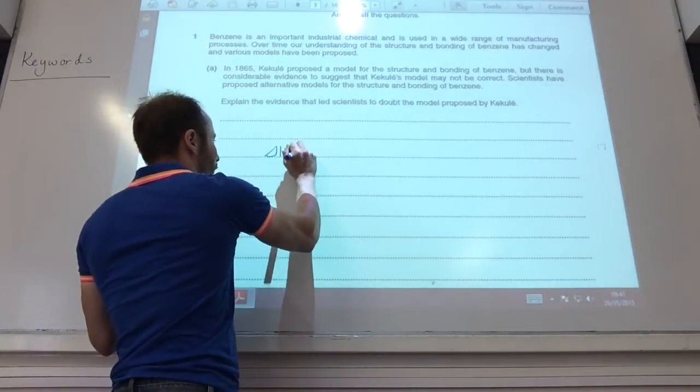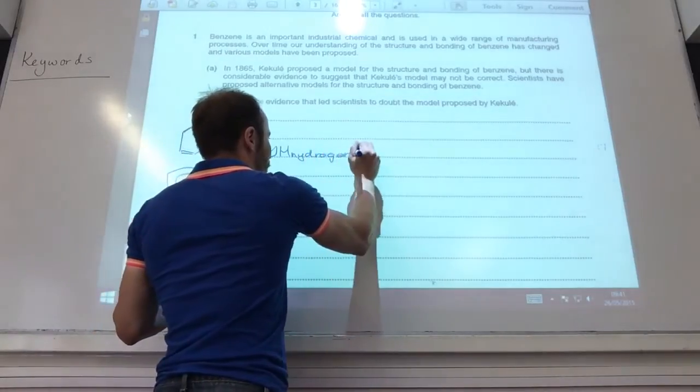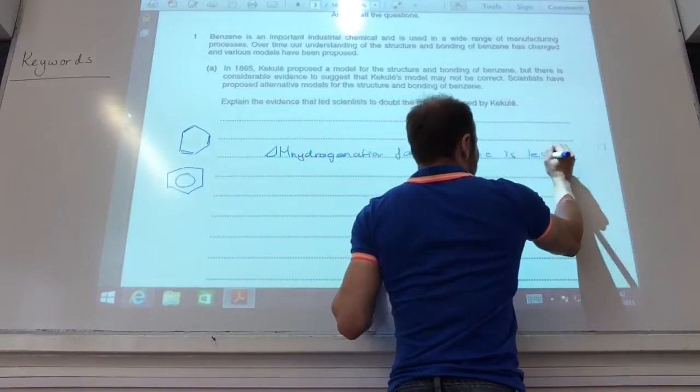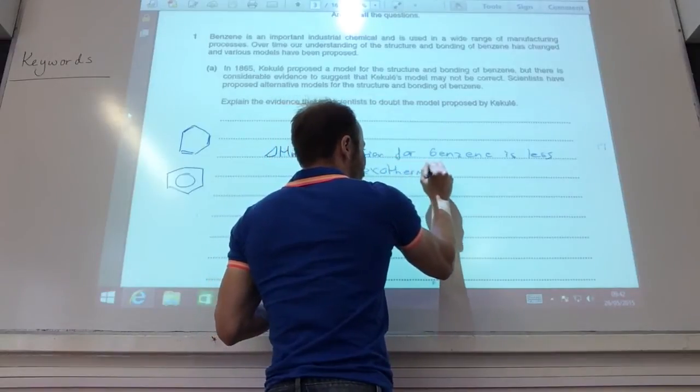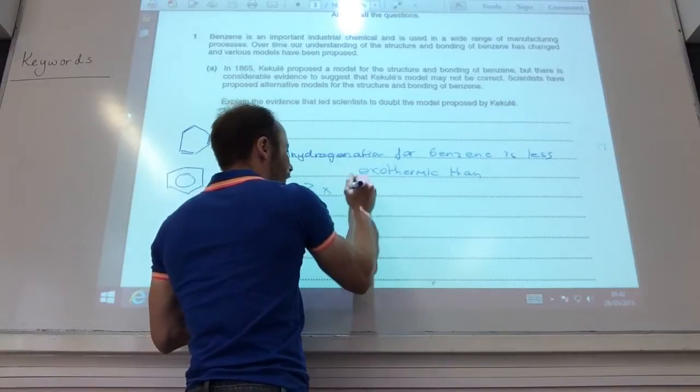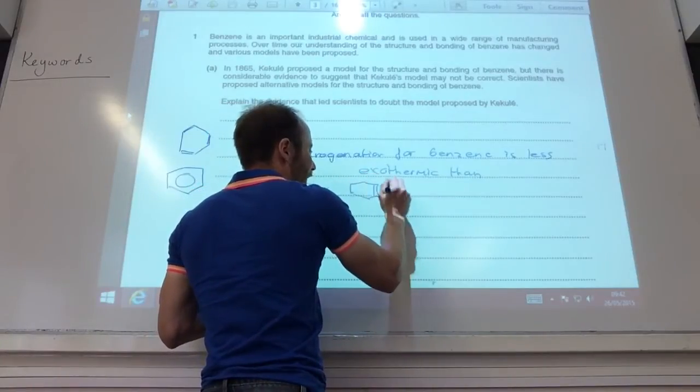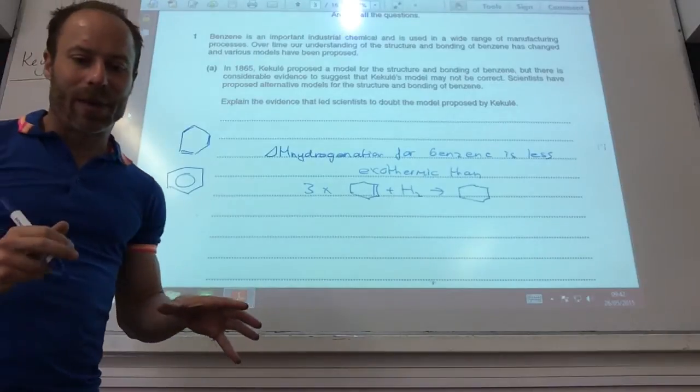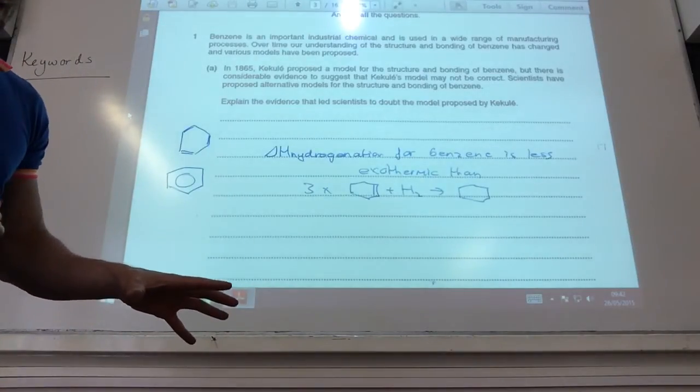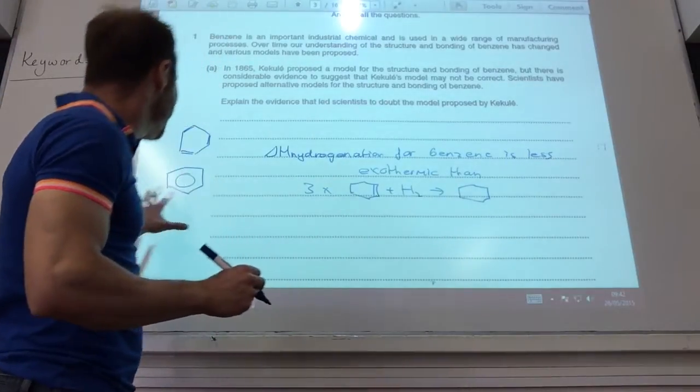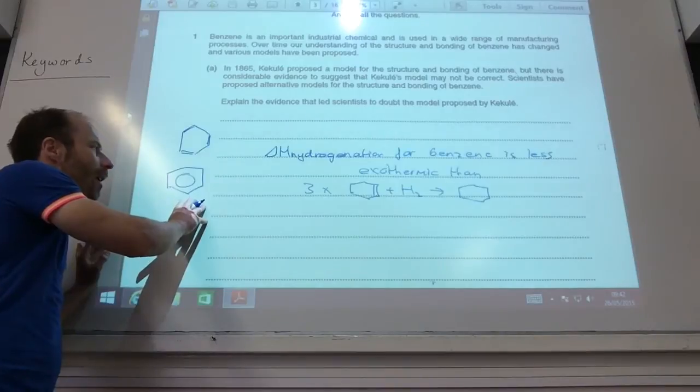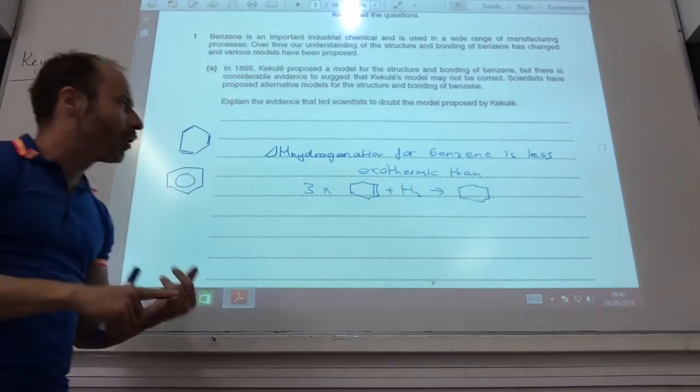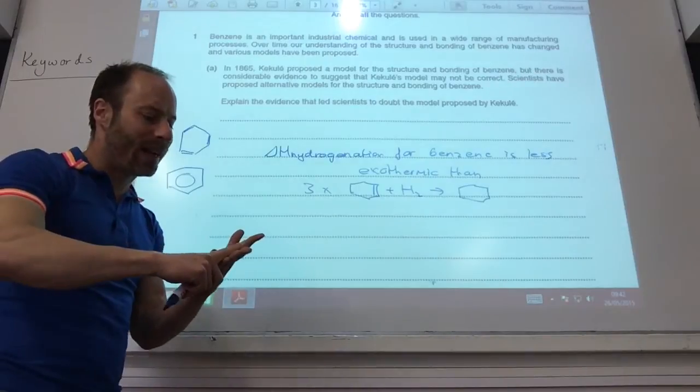So delta H hydrogenation of benzene is less exothermic than 3 times cyclohexane plus H2 to go to cyclohexane. You'd expect it to be about the same, but it's less exothermic when compared to that. And then the final one is, you know, benzene only reacts with bromine with a catalyst, with a halogen carrier. However, you'd expect it, if it's got three double bonds, you'd expect it to just react with bromine without a catalyst. So three things: bond length, hydrogenation, and reaction with bromine.